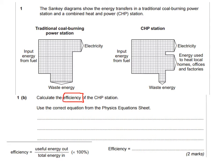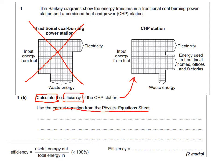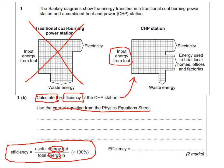The next part says calculate the efficiency of the CHP station. The word 'calculate' means I'll need values, but there are no values in the question itself — so I'll have to use the diagram. It says use the correct equation from the physics equation sheet; in this case only one really applies: efficiency equals useful energy out divided by useful energy in. I need to look at the energy in and the useful energy out, then count the squares to get relative values.